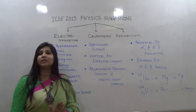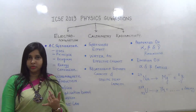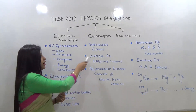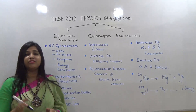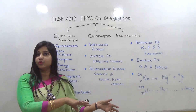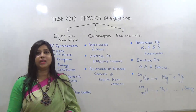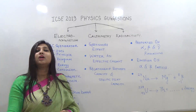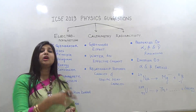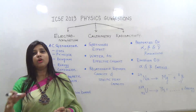Next is calorimetry. Under calorimetry, the greenhouse effect is important — what gases the greenhouse effect produces and the harmful effects of greenhouse effect. Then there is water as a coolant. The property that makes water an effective coolant is its very high specific heat capacity — for every 1°C fall in temperature, water absorbs a large amount of heat, around 4200 J/kg/K.